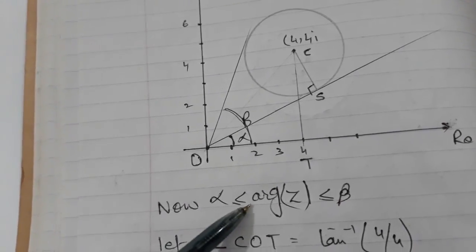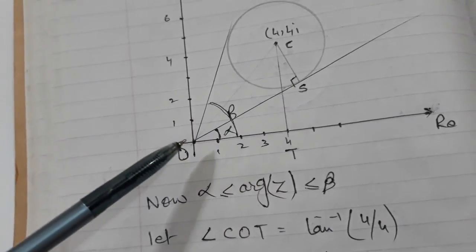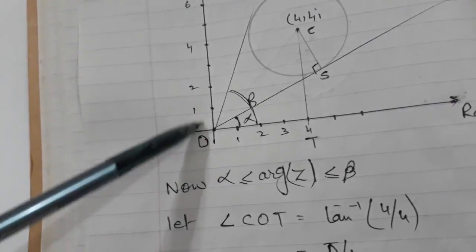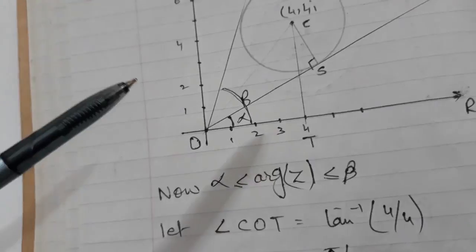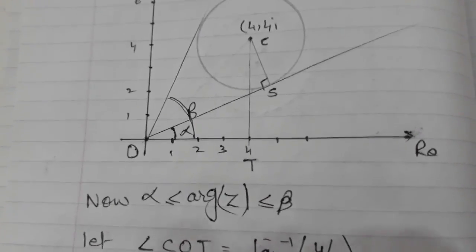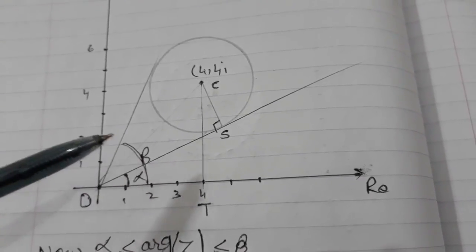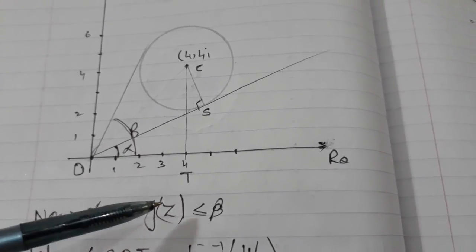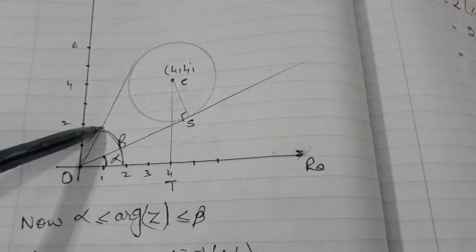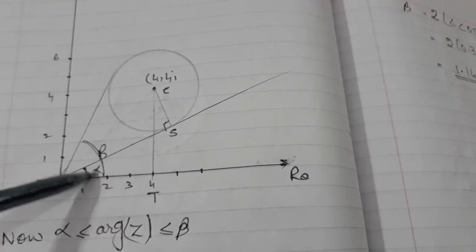The next part asks us to find the region between two angles. Again, this is the circle we have drawn. From the origin — since the expression is just Z, it means from the origin — if we draw the smallest angle and the greatest angle, they correspond to two tangents from the origin to the circle. We know the two tangents are equal in length, and the line from the origin to the center bisects this angle. So I need to find alpha and beta, which define the region between them.